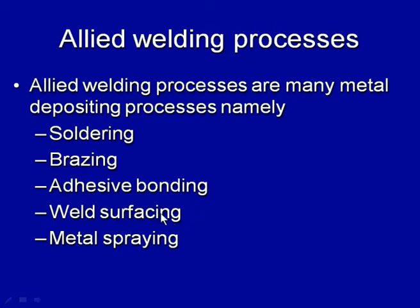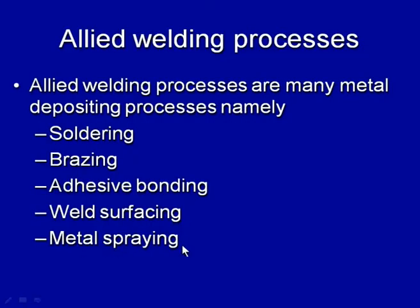In weld surfacing, weld overlays are developed over the surface either to get the desired dimensions or to obtain better corrosion and wear resistance. Metal spraying is another metal deposition process where metals, alloys, and their composites are sprayed over base metal surfaces to enhance wear and corrosion resistance or to restore desired dimensions. In all these processes except weld surfacing, melting of the base material is generally not achieved.